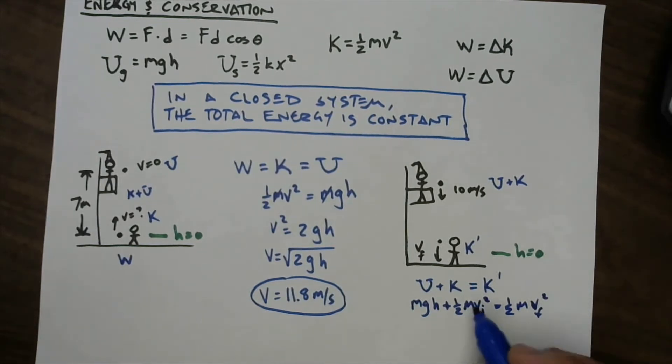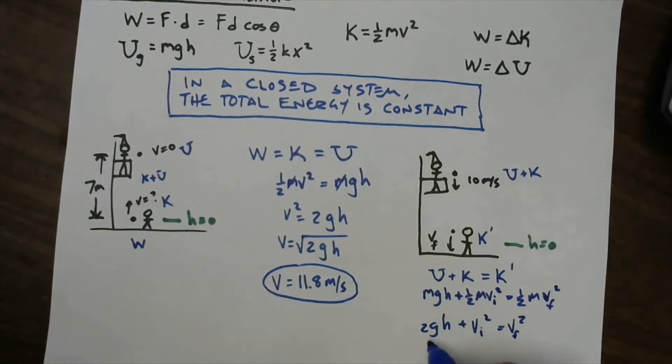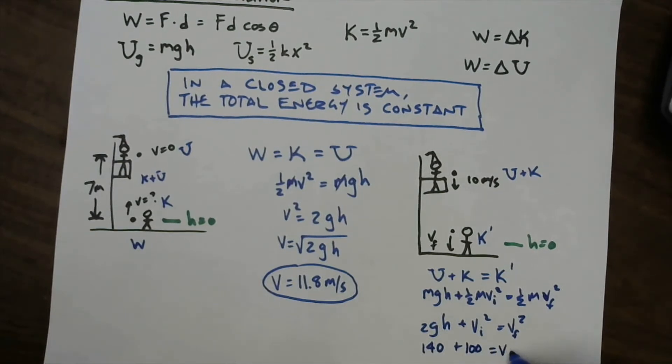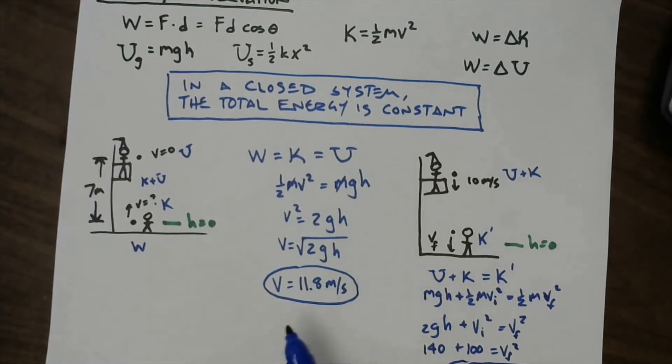M times G times H plus one half MV initial squared equals one half MV final squared. The M's all cancel again. And we multiply through by two, and we get two GH plus VI squared equals VF squared. And so we can put the numbers in here, two GH. That wound up being 140 last time, two times seven times 10. And VI squared is 10 squared. So that's 100. And that's equal to VF squared. So we get 240, we take a square root, and VF turns out to be 15.4, I believe. So yes, it's going to hurt a little bit when Romeo gets hit with the rock. That's substantially faster than he threw it upwards. It turns out to be about 38, 40 miles per hour.